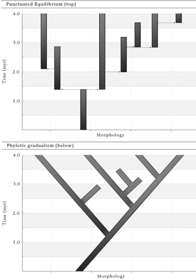Cladogenesis is the process by which a species splits into two distinct species, rather than one species gradually transforming into another. Punctuated equilibrium is commonly contrasted against phyletic gradualism, the idea that evolution generally occurs uniformly and by the steady and gradual transformation of whole lineages. In this view, evolution is seen as generally smooth and continuous.